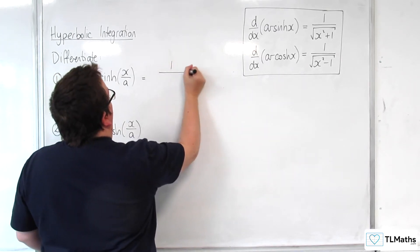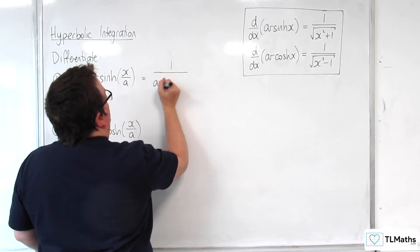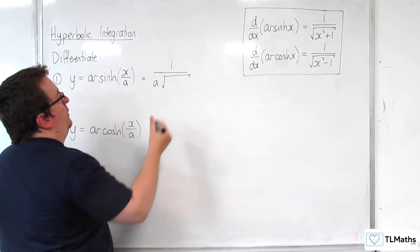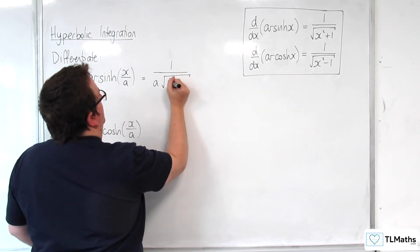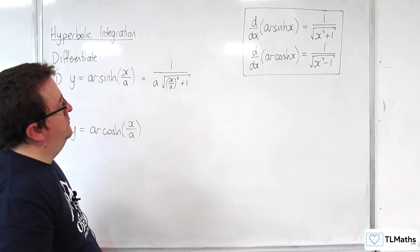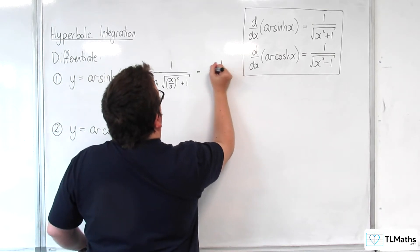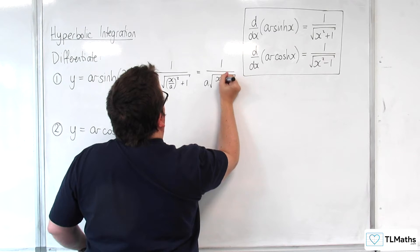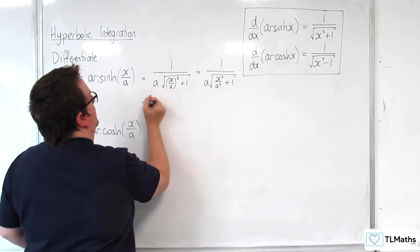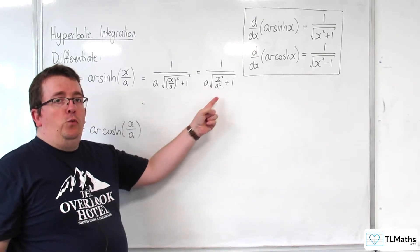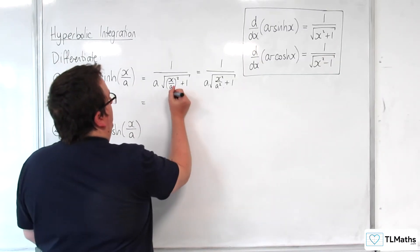So I would have 1 over a times by 1 over the square root of x over a squared plus 1. So this is 1 over a times the square root of x squared over a squared plus 1. So what I'm going to do is I'm going to bring that a into the square root by writing that as 1 over the square root of a squared times x squared over a squared plus 1.